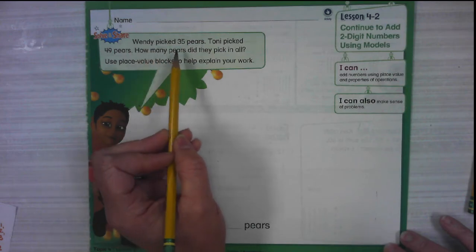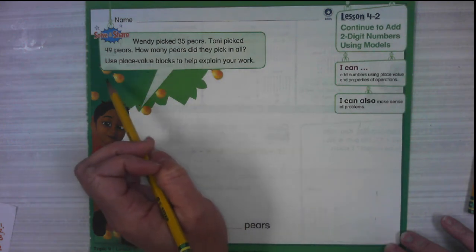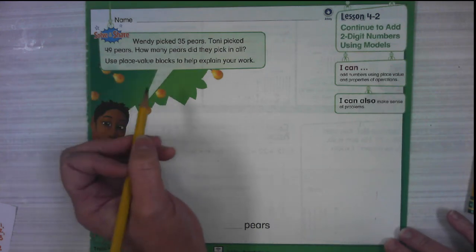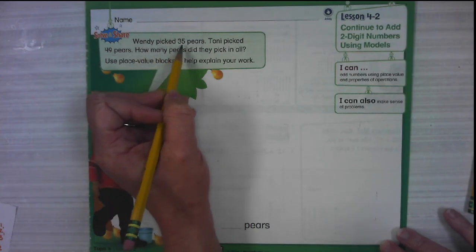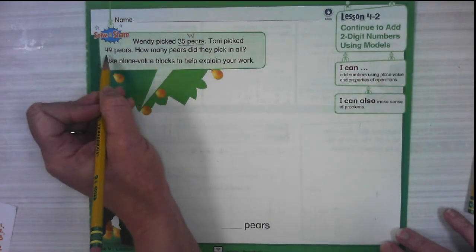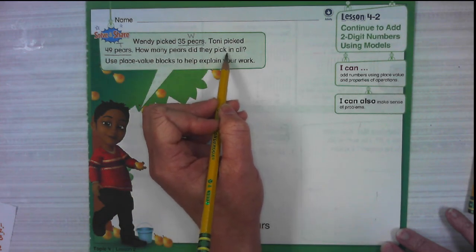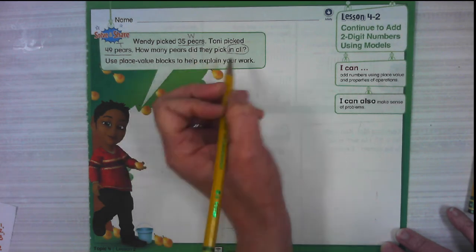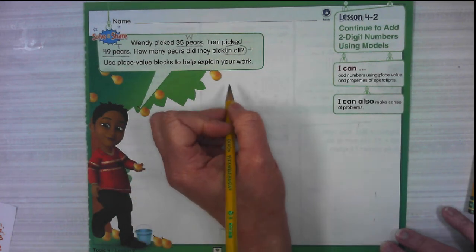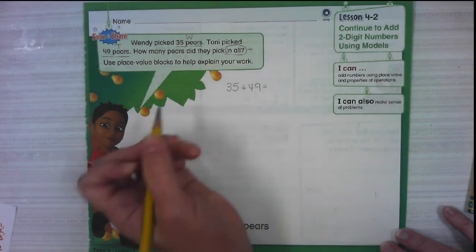So here's our problem. Wendy picked 35 pears, Tony picked 49 pears. How many pears did they pick in all? Use place value blocks to help explain your work. This makes me think that we need to add these together to figure out what Wendy and Tony together had. So my equation is going to be 35 plus 49.